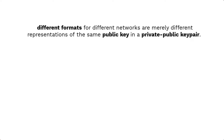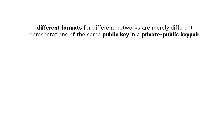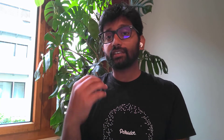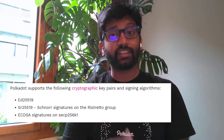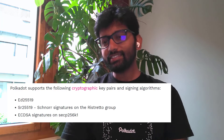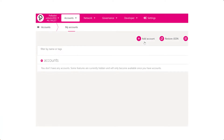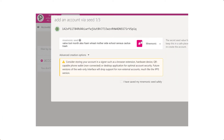To understand this accurately, let's take a look at the processes of address generation, derivation, and portability. A valid account on substrate-based chains requires a private key that can sign on one of the supported signature schemes. Let's start with what most wallets do when trying to create a new account: generate a mnemonic phrase.